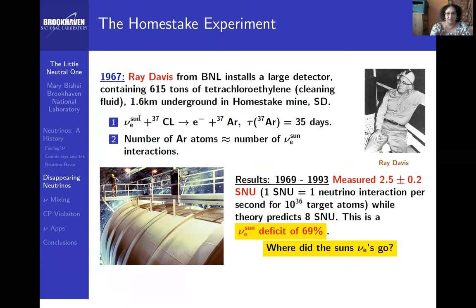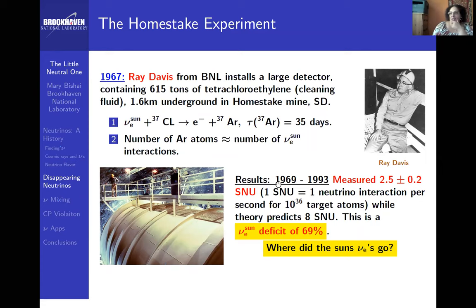This experiment was installed in a gold mine in South Dakota called the Homestake Mine, 1.6 kilometers underground. Again, we go underground so we don't have cosmic ray interactions. He would take the fluid, bring it back to the lab, bubble hydrogen through it, and chemically extract and count individual atoms of argon-37. He ran this experiment from 1969 to 1993 — a typical particle physics experiment running for decades.